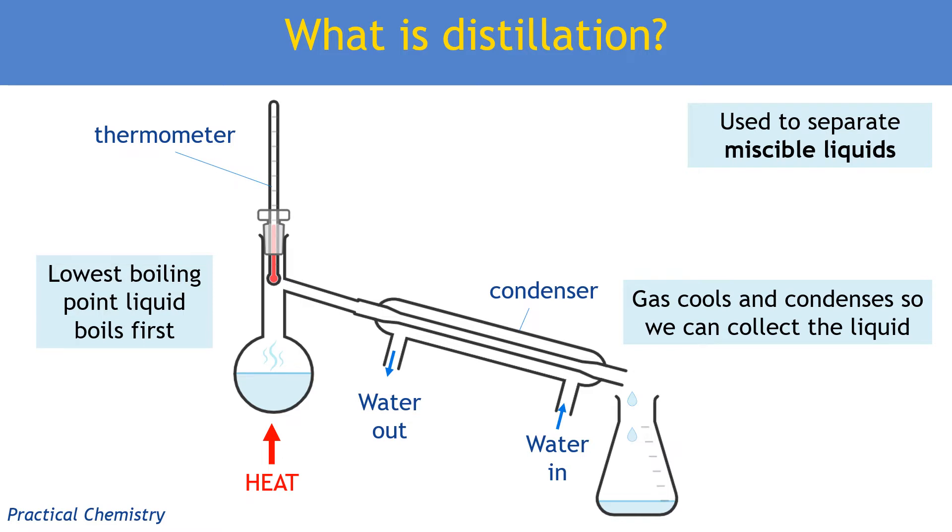The thermometer tells us the boiling point of the substance that is going into the condenser at that time. For example, if our mixture contained both ethanol and water, we could tell that what we are collecting by reading the thermometer, because the liquids have different boiling points.